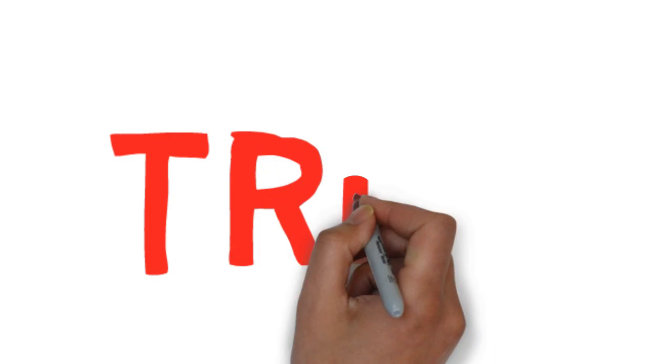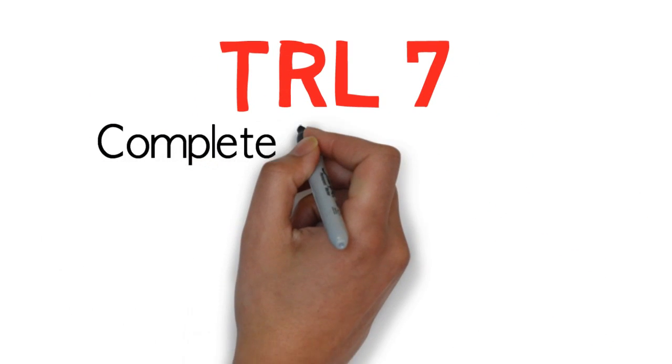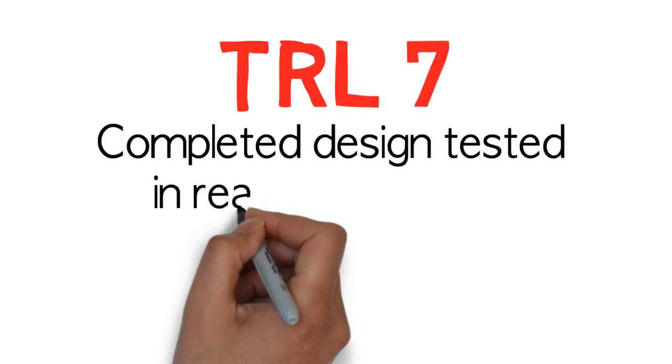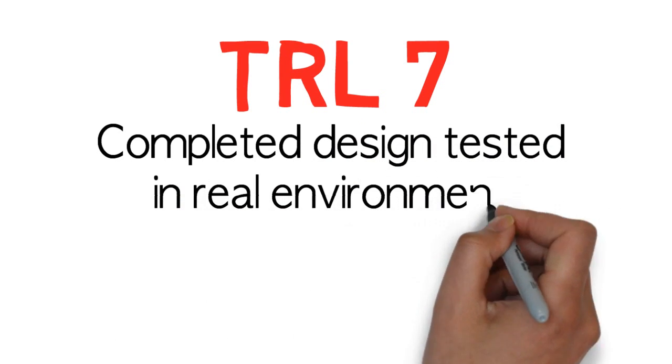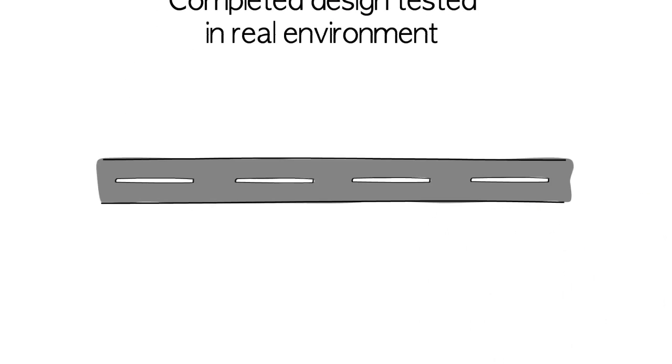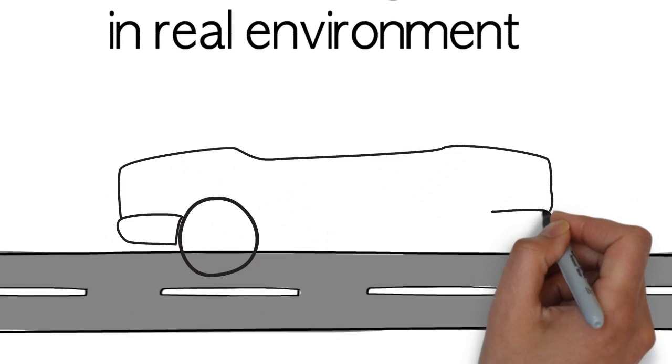TRL 7: The design is virtually complete and tested in a real environment. At this point, the tyre is tested on a vehicle on the road.